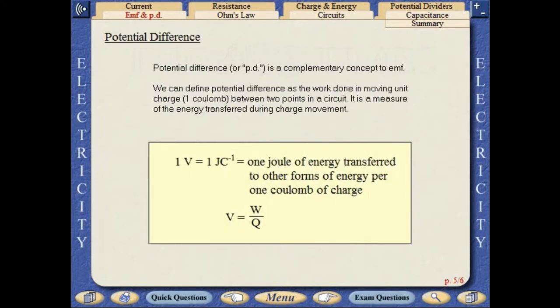Potential difference, or PD, is a complementary concept to EMF. We can define potential difference as the work done in moving unit charge between two points in a circuit. It is a measure of the energy transferred during charge movement.